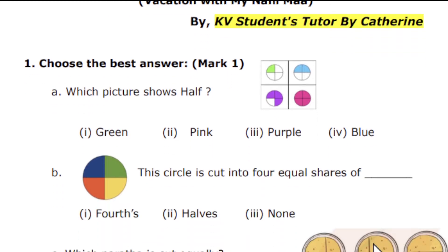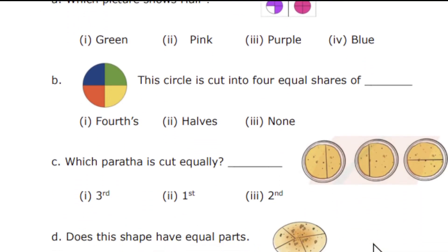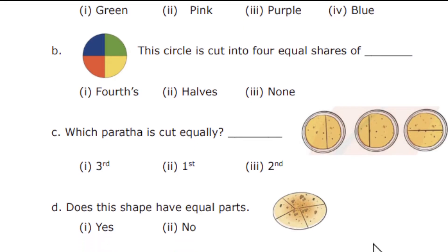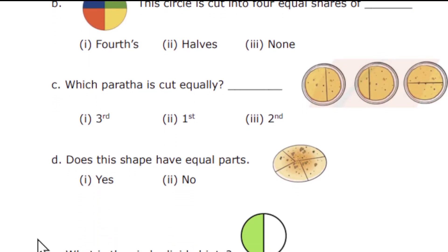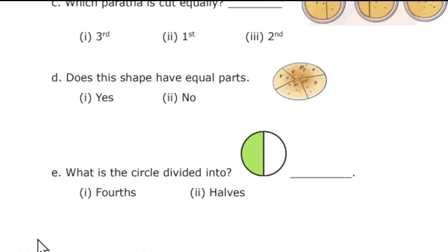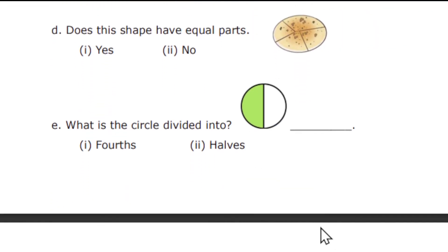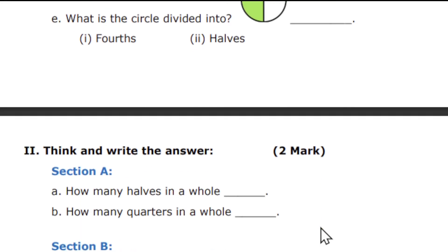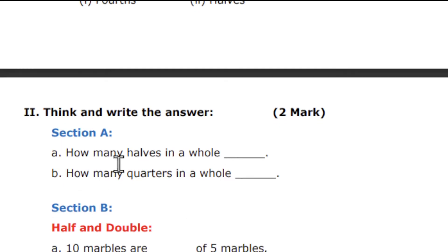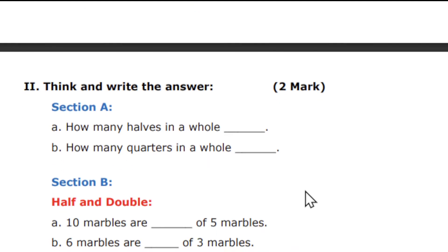Questions will be very simple. Those who received the email, please complete the worksheet and send it back for correction. Next: does the shape have any equal parts? What is the circle divided into — whether it's fourths or halves? And the next part is think and write the answer: how many halves in a whole, and how many quarters are there in a whole?